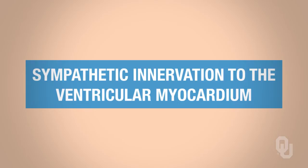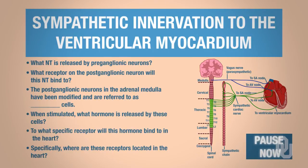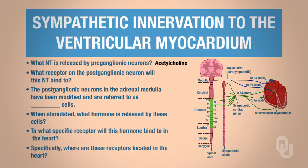Just to remind you of sympathetic innervation to the heart — please test yourself, pause the video, and fill in these steps. The neurotransmitter released from the preganglionic neurons will always be acetylcholine, and the receptor on the postganglionic neuron to which acetylcholine binds is nicotinic cholinergic. The postganglionic neurons in the adrenal medulla have been modified and are referred to as chromaffin cells. When stimulated, the chromaffin cells release a hormone — primarily epinephrine.